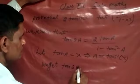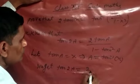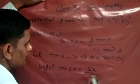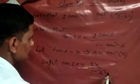Tan 2a equals 2 tan a, replaced by x, gives 2x upon 1 minus x square.